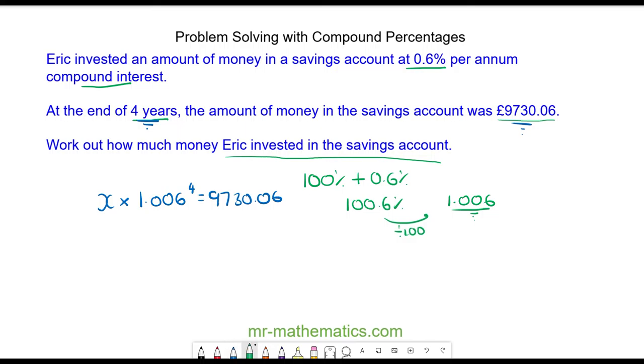To work out the value of x, we divide both sides by 1.006 to the power of 4. These will cancel, so we're left with x is equal to approximately £9,500 to the nearest pound.